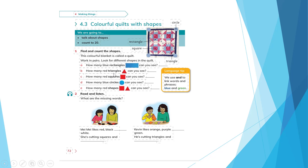How many red triangles? Look: 1, 2, 3, 4, 5, 6, 7, 8, 9, 10, 11, 12, 13, 14, 15, 16. Also 16.